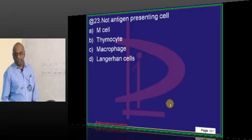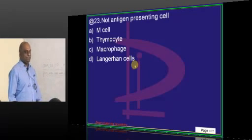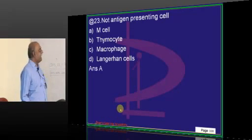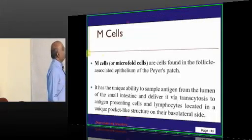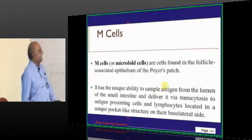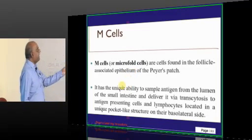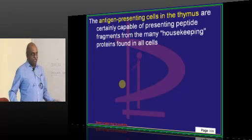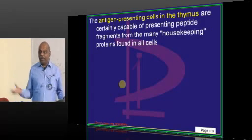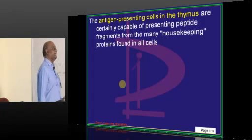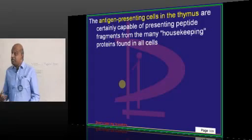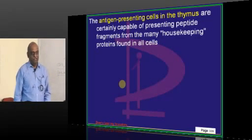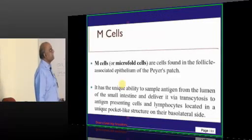What is not an antigen-presenting cell? Macrophage and Langerhans cell are antigen-presenting. M cells - microfold cells - are typically present in Peyer's patches in the intestine in the follicle-associated epithelium. Their job is to pick up organisms from the gut and give them to antigen-presenting cells. By itself, the M cell is NOT an antigen-presenting cell, whereas thymocytes are antigen-presenting cells.